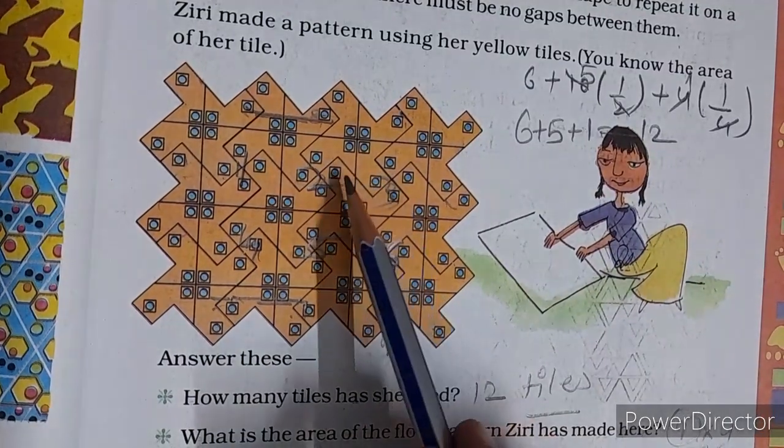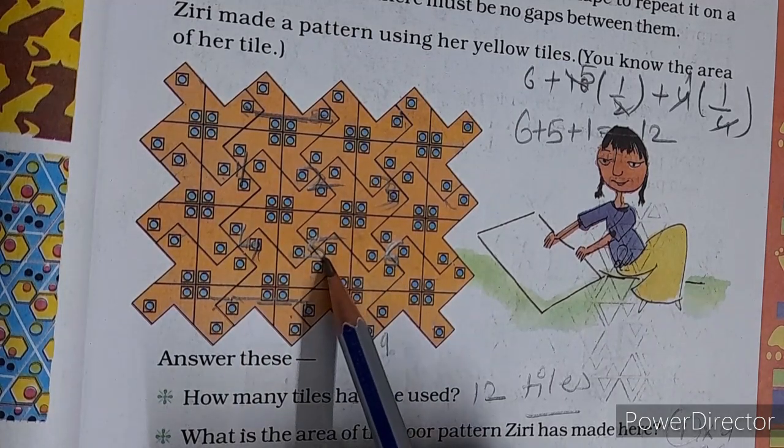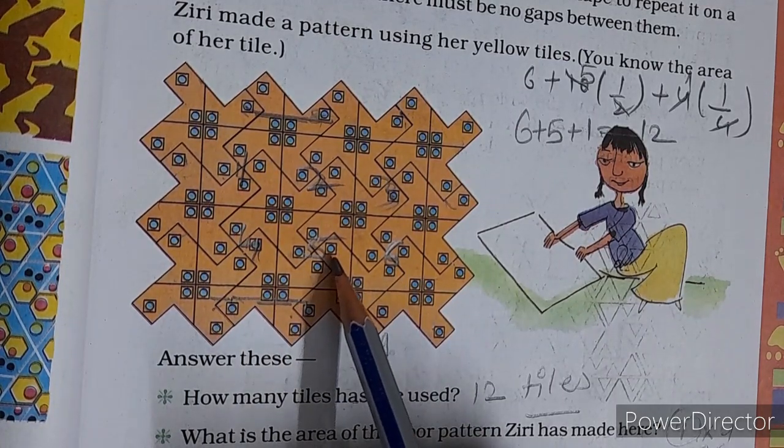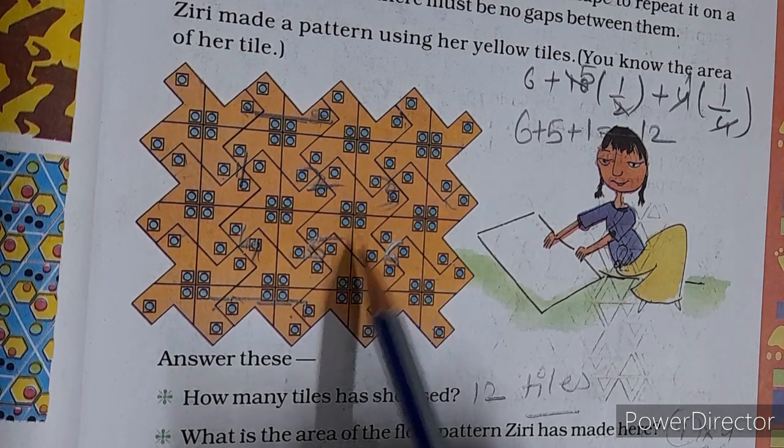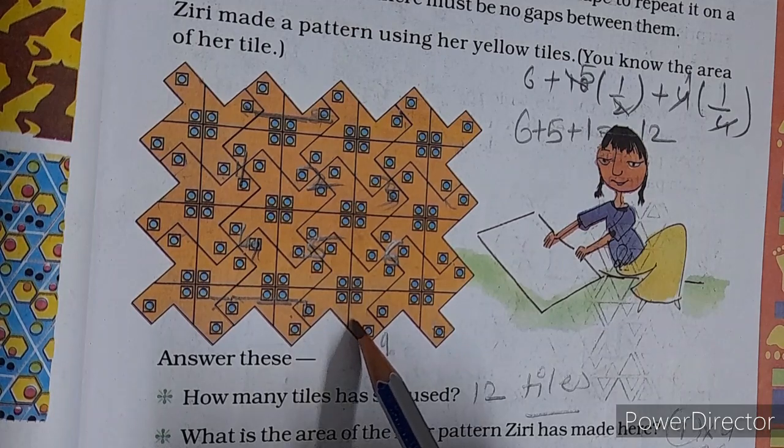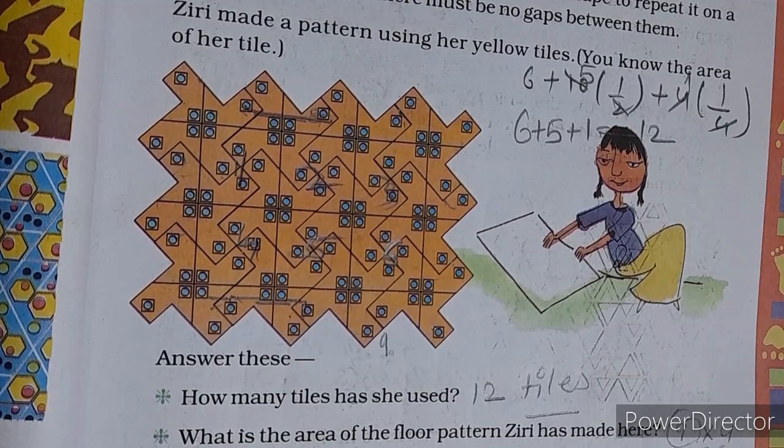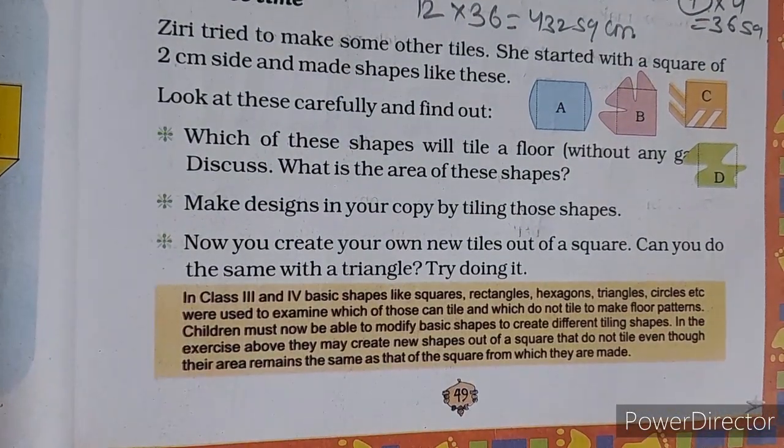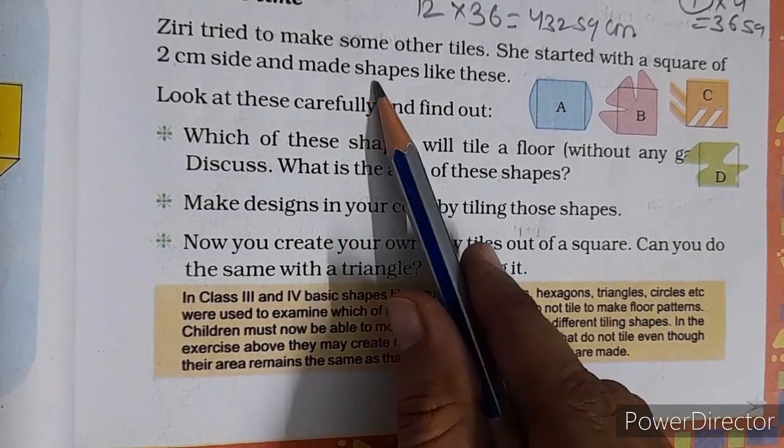1 shape is 9 square centimeter, so how much will be 4 shapes? 1 shape has 9, so 4 shapes will have 36. So how much will be 12 tiles? 432 square centimeter. Now the next practice time.